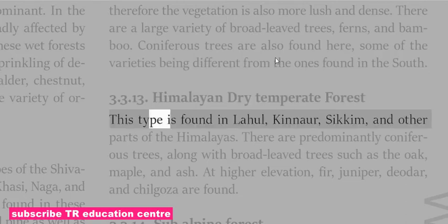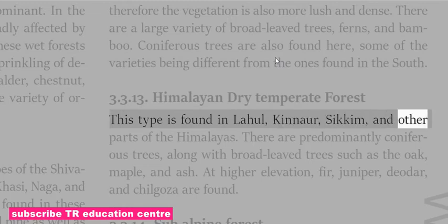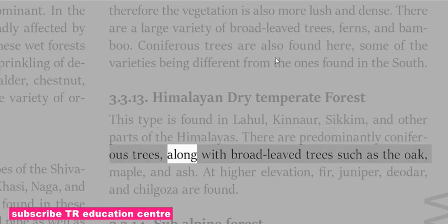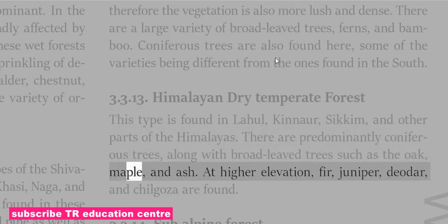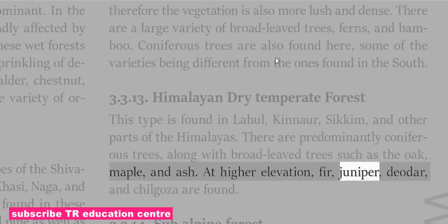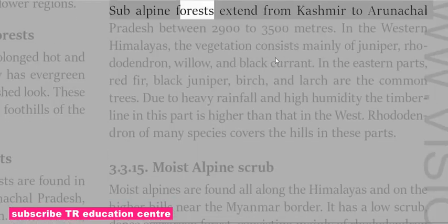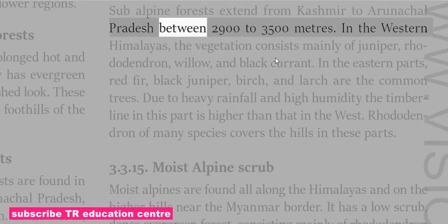Himalayan Dry Temperate Forest is found in Lahul, Kinnaur, Sikkim and other parts of the Himalayas. There are predominantly coniferous trees along with broadleaved trees such as oak, maple and ash. At higher elevations, fir, juniper, deodar and chilgoza are found.